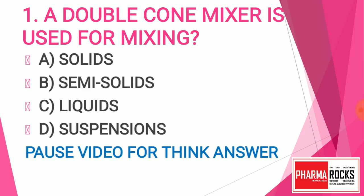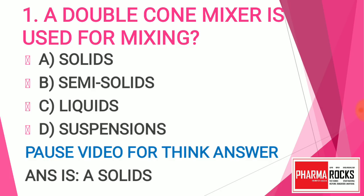We give you the answer after 5 to 10 seconds so you can think about the answer by pausing the video. Now it is time for the answer. Question one answer is A — Solids. A double cone mixer is used for the mixing of solid materials like powders and granules.